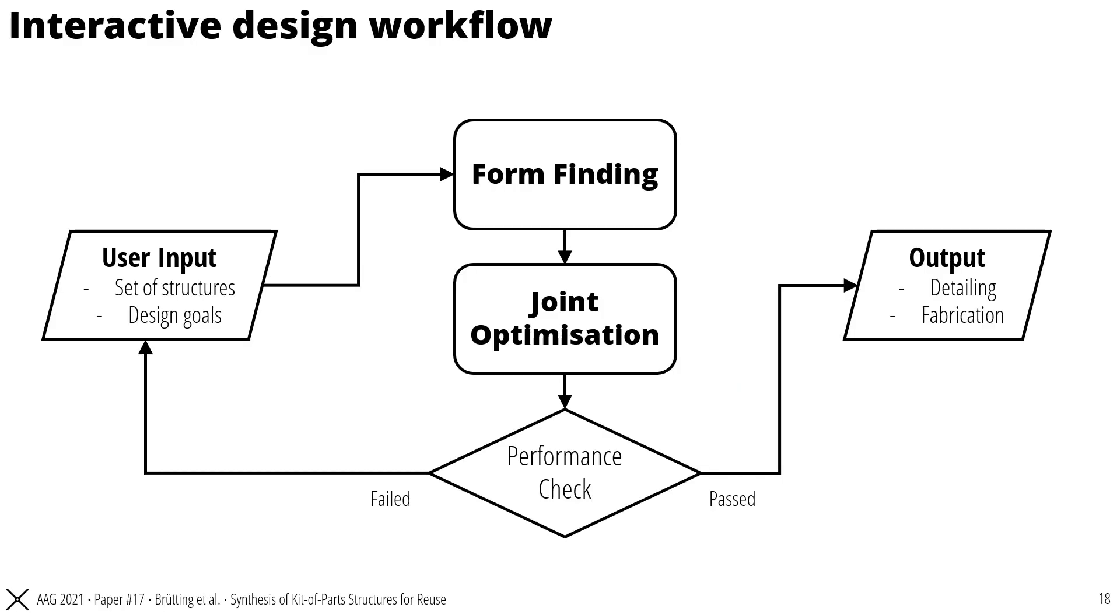To achieve that, we have developed a computational workflow that consists of two main parts. First, a form-finding part where the geometries of the set of defined structures is optimized such that a set of bars with bespoke lengths can be reused among the different structures. And second, a joint optimization step which is used to design spherical joints that combine the connection pattern of nodes in different structures into one reusable joint. All this is implemented in a way that it allows for fast computations and user interactions.